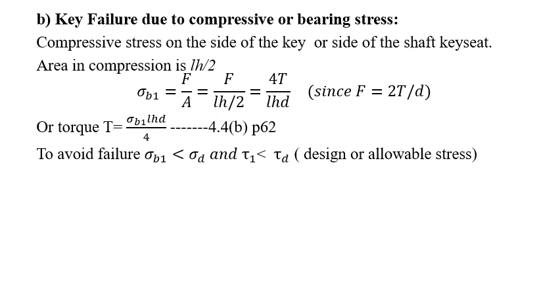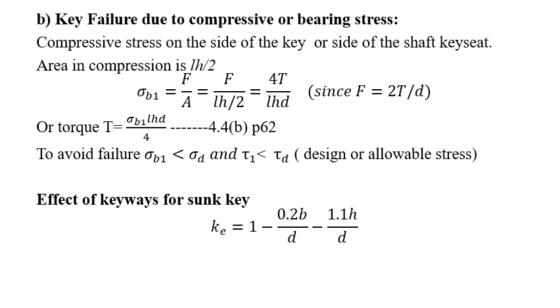Effect of keyways for the sunk key equation is also used sometimes. We can have an effect of keyway factor ke = 1 - 0.2(b/d) - 1.1(h/d). This is the equation sometimes we use in the problem to compensate for the keyways in the sunk key.